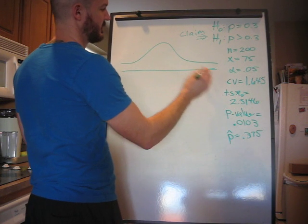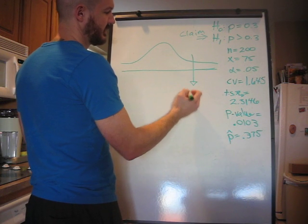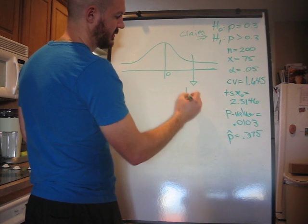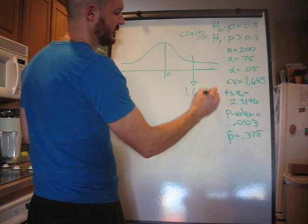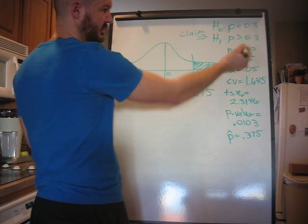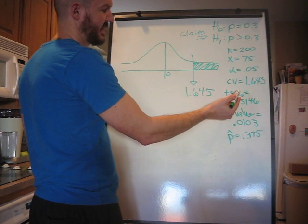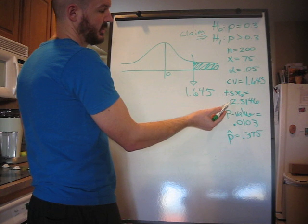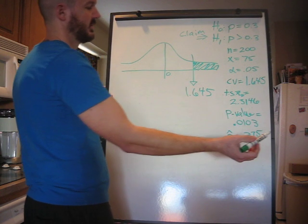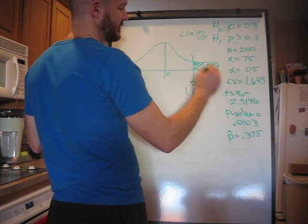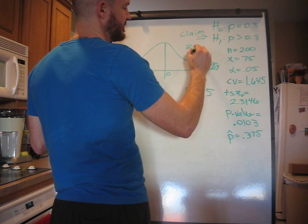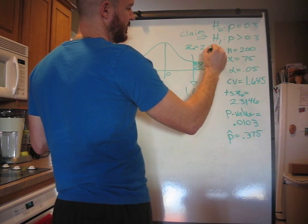That's a beautiful curve. Right-tailed test. That line represents the critical value of 1.645. I am going to shade this. So, anything to the right, right-tailed of 1.645 will be rejected. Our z is 2.3146, which I am going to round to 2.31. It will be over here somewhere. That is z0 equals 2.31.